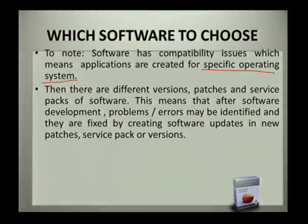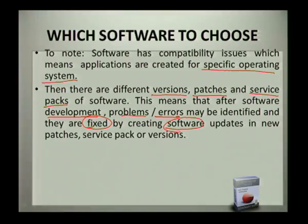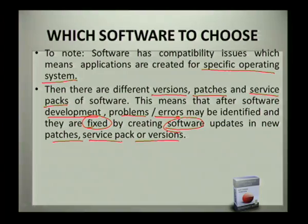There are different types of software classified in terms of versions, patches, and service packs. After software development, problems and errors sometimes occur. Because of these problems and errors, developers are forced to fix them by creating new software updates — and that is why we get updated software in the form of service packs, patches, and new versions.